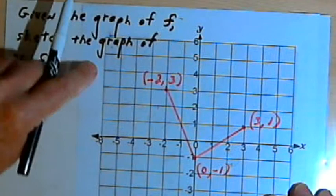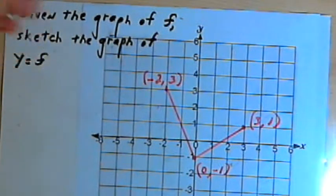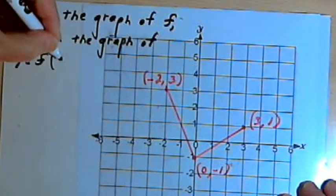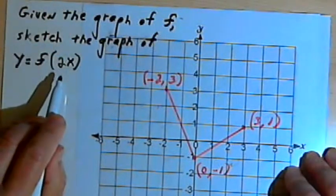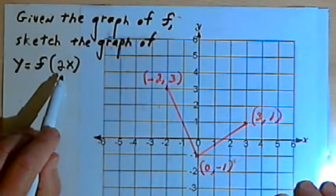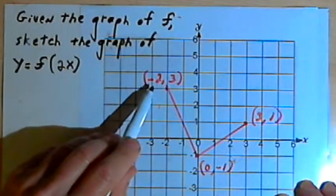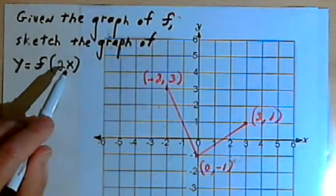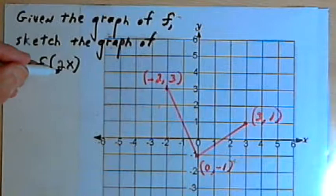Now, besides shifting the graph, besides translations, we can also stretch or compress the graph. So let's say we have y equals f of 2x. Once again, this is going to behave in a way that's kind of opposite to what you would expect. You would think that this would tell me to take the x-values and multiply them by 2. But in fact, this 2x is telling me to take the x-values and multiply them by the reciprocal of 2.